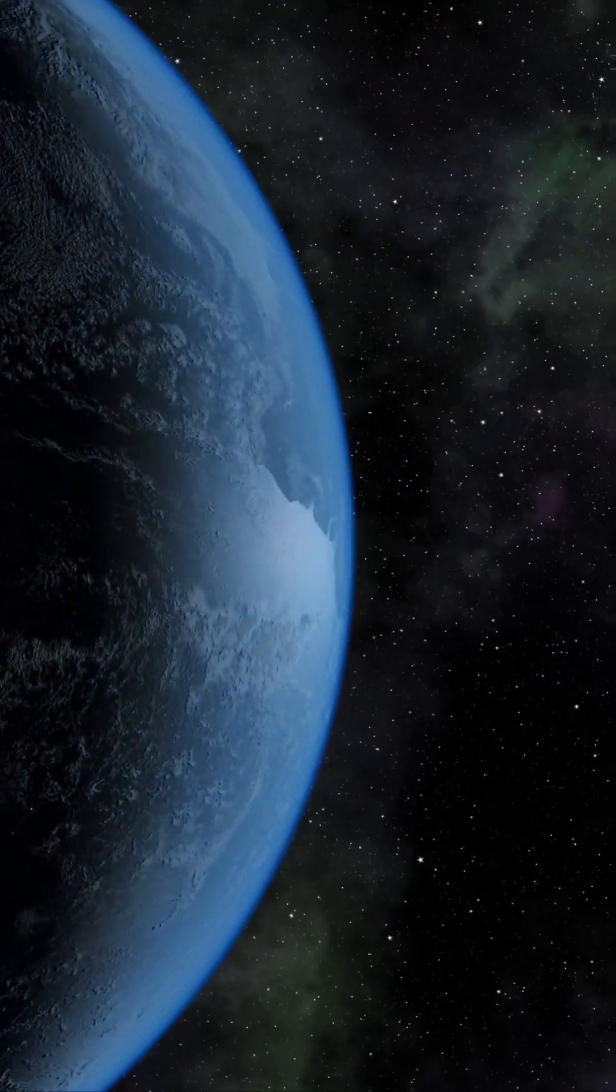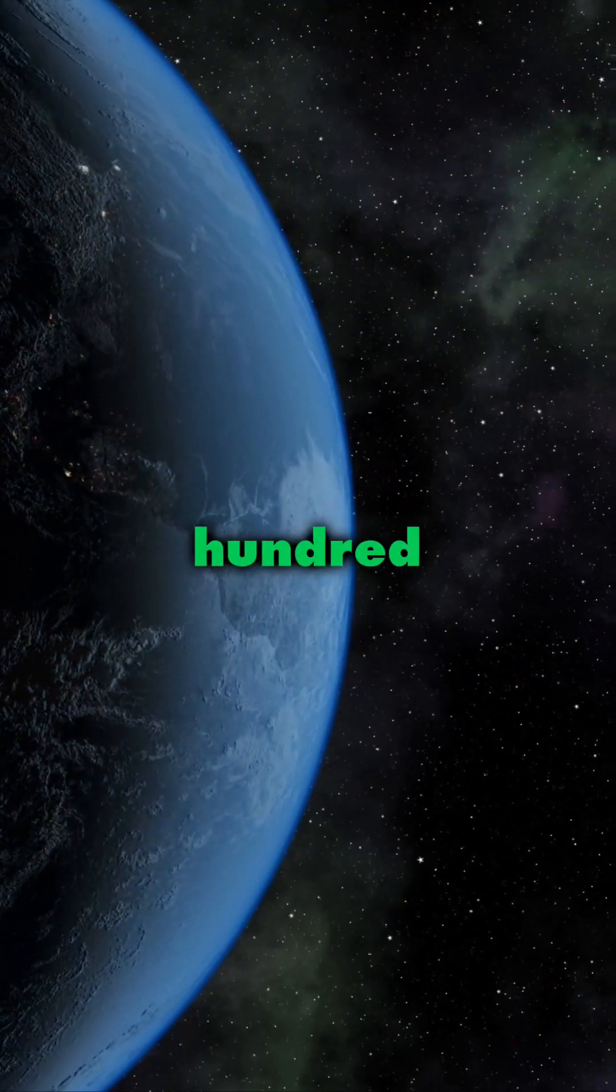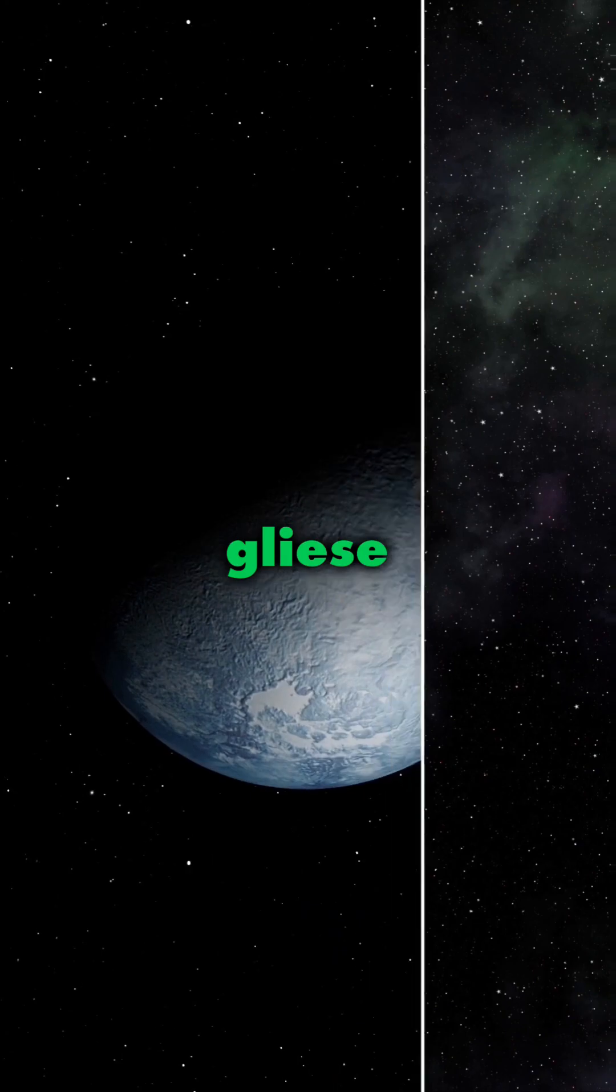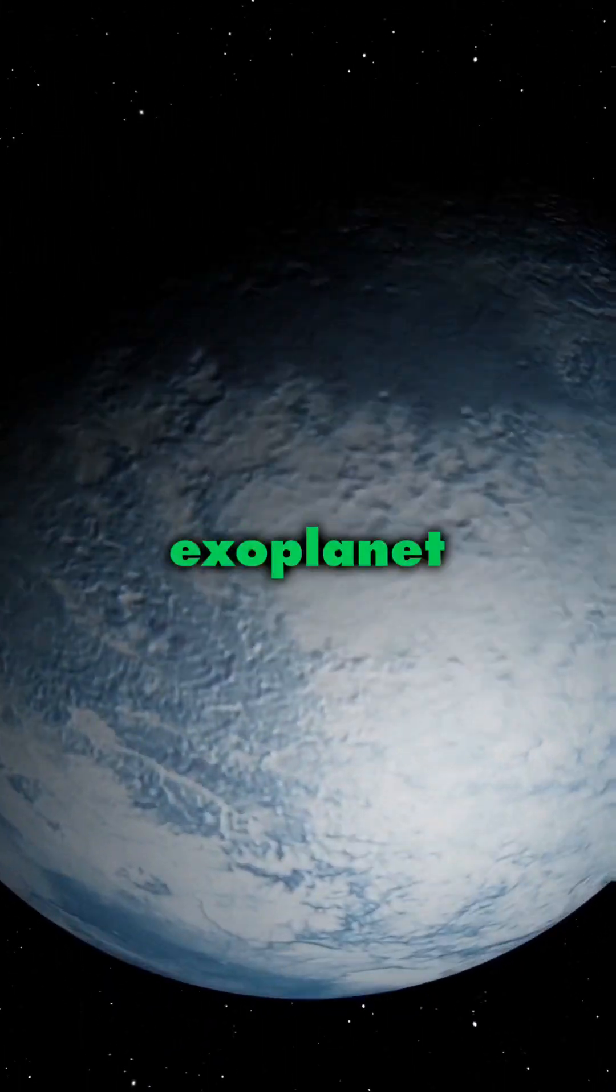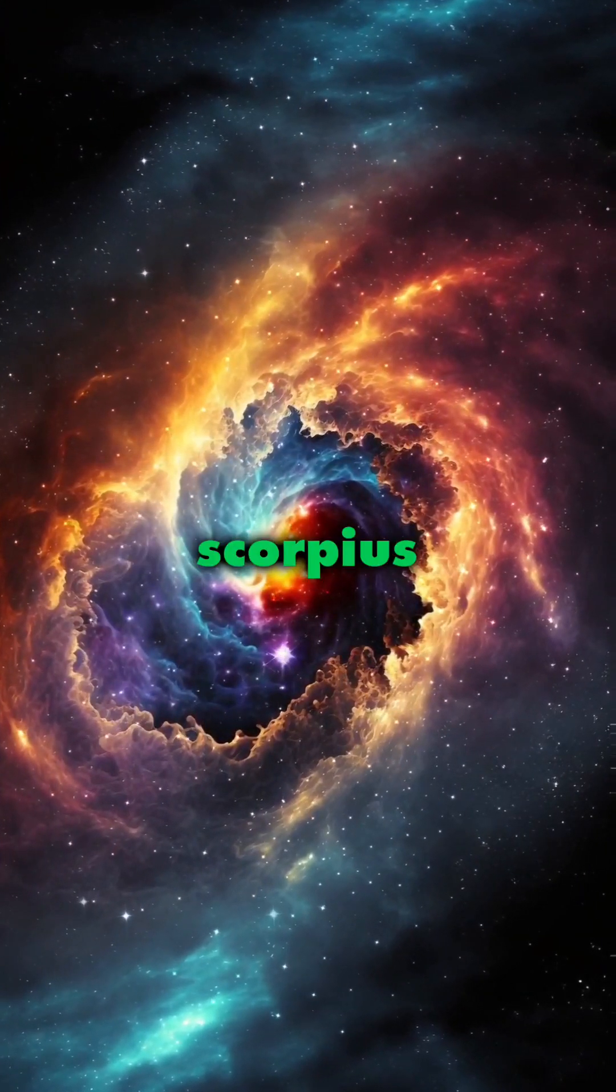Curious about alien worlds? Let's dive into the wonders of Gliese 667 cc. Gliese 667 cc is an exoplanet located in the constellation Scorpius.